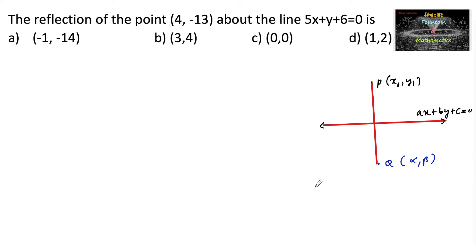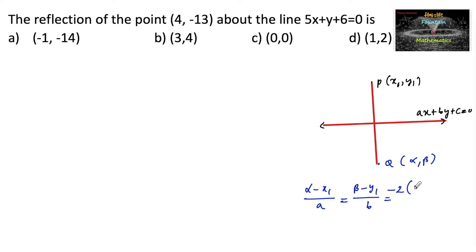Then we have the relation: (α - x1)/a = (β - y1)/b = -2(ax1 + by1 + c) / (a² + b²).